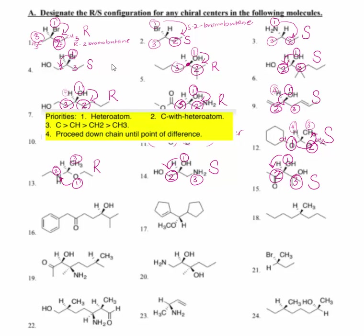Number sixteen: we have oxygen for number one, hydrogen for number four. We have a CH2 here and a CH. CH is a higher priority than CH2. We rotate clockwise. That makes sixteen an R configuration.